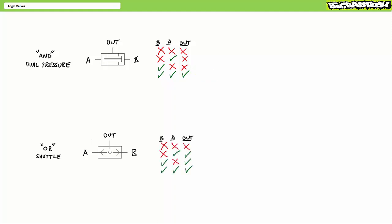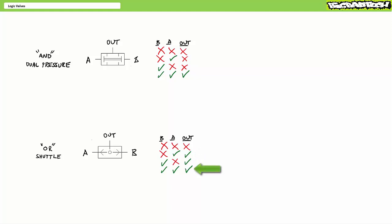In contrast, an OR or shuttle valve works like this: there must be a pilot signal at either input A or input B for there to be an output. When neither A nor B receive an air pilot signal, the OR valve produces no output. When only A receives an air pilot signal, the OR valve produces output. When only B receives an air pilot signal, the OR valve produces output. And finally, when both A and B receive an air pilot signal, the OR valve also produces output.